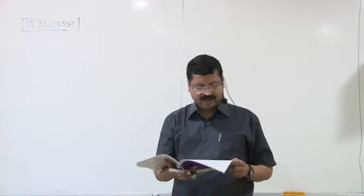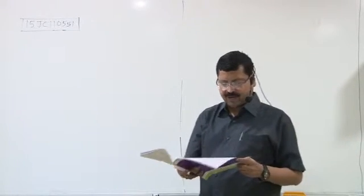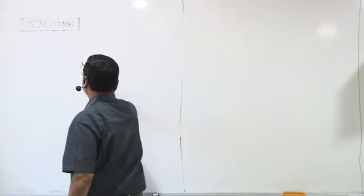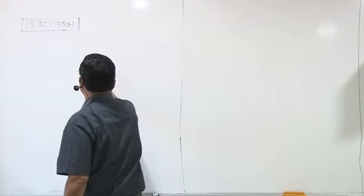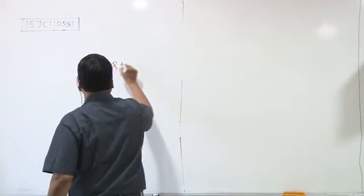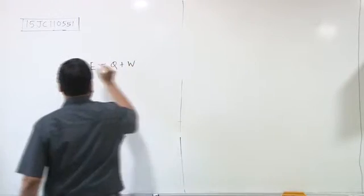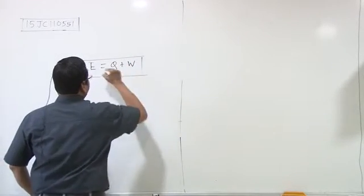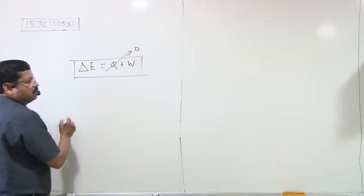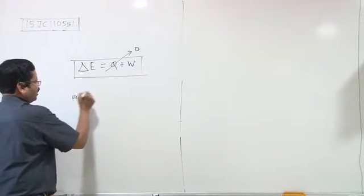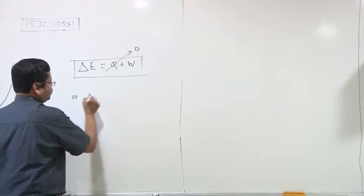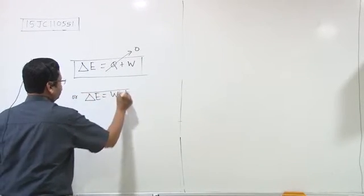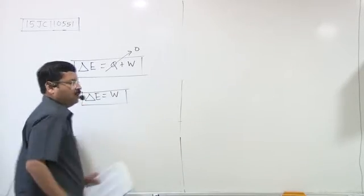In this question, in an adiabatic expansion of an ideal gas, the first law of thermodynamics is delta E is equal to Q plus W. Now, in the adiabatic process, Q is zero. So, delta E, the change in internal energy, is equal to the work involved.